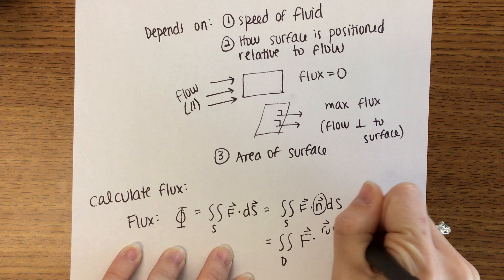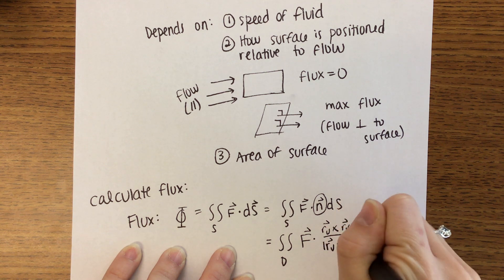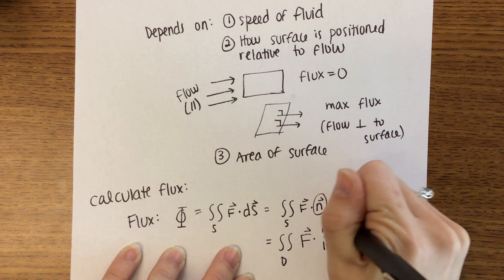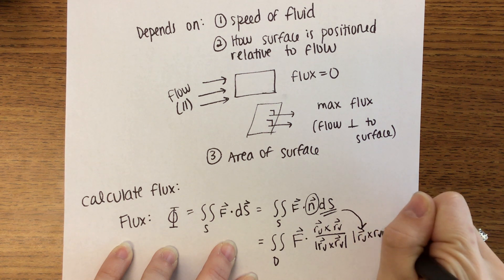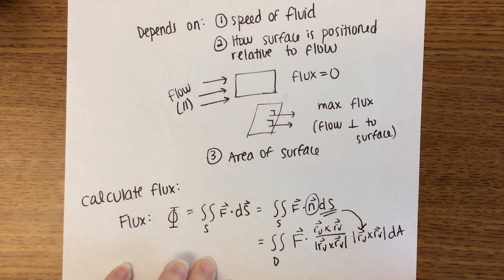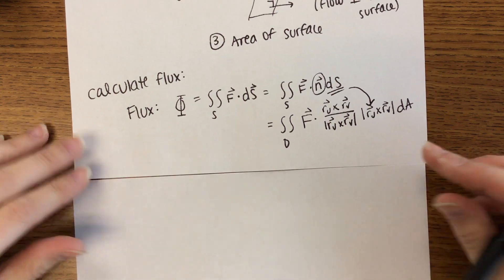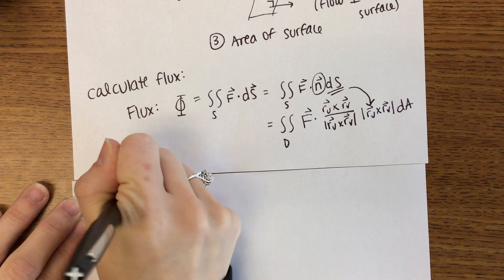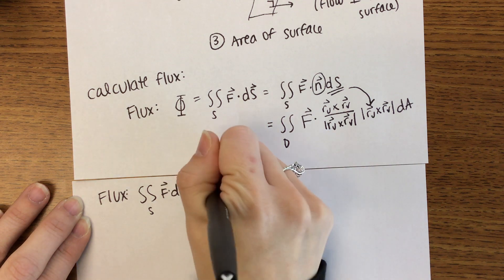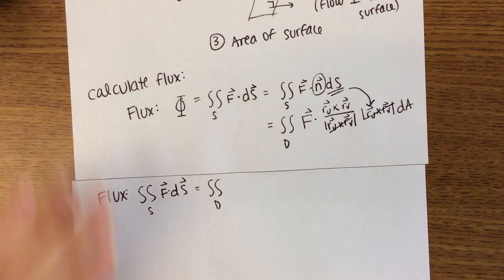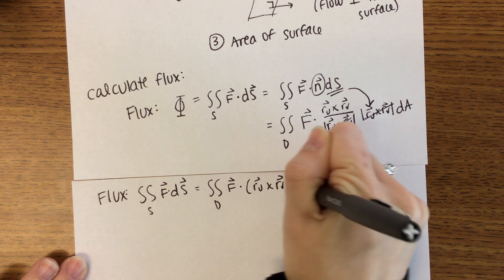We said N was R of U cross R of V, but then N is a unit vector so you have to divide by the magnitude. Then dS becomes the magnitude of R_U crossed with R_V, dA. Ultimately, flux — the surface integral of F dot dS — becomes the double integral over region D. The two magnitudes cancel out, so we get F dotted with R_U crossed with R_V, dA.